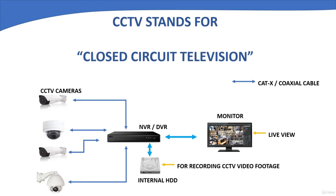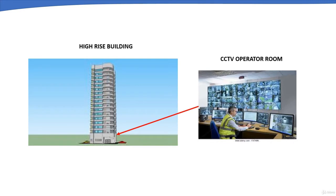CCTV system stands for Closed Circuit Television System, which means that the TV signals are transmitted privately and distributed for monitoring, especially for surveillance and security purposes. For example, in a high-rise building, a security person can monitor all the floors or the area of interest by just sitting in front of a CCTV system, which increases the response of the security person in case of any emergency. The recorded videos can also be used as evidence.